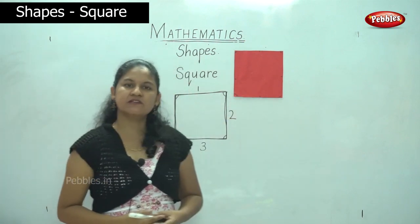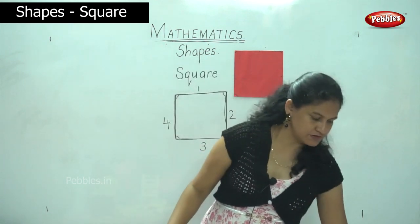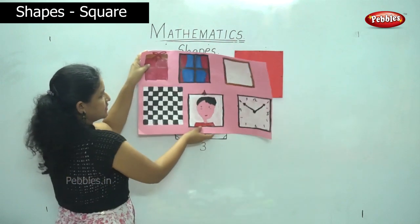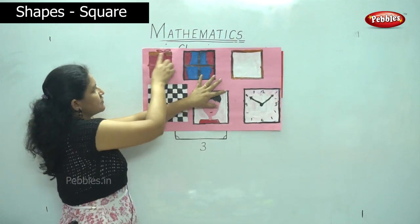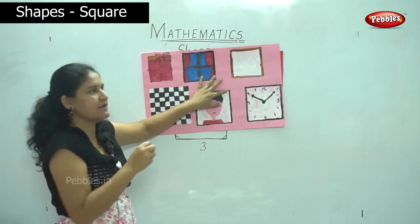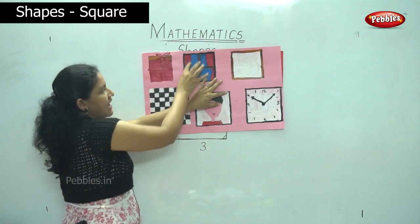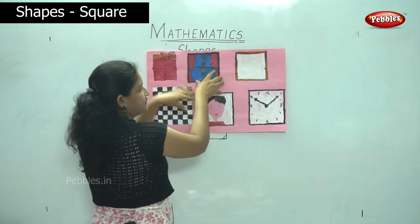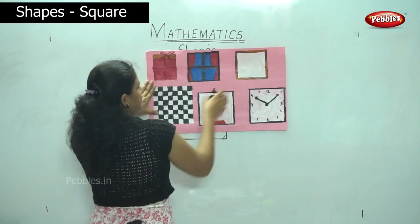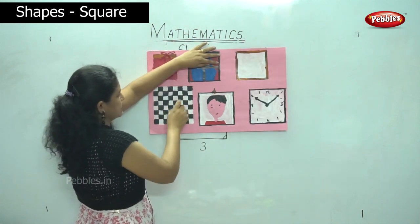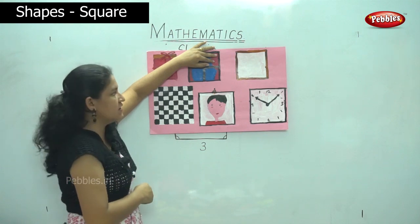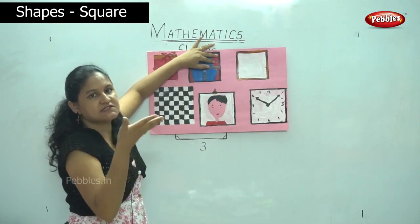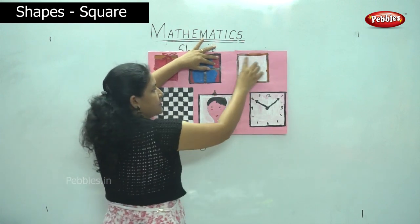So we are going to see some examples of a square. We have six examples of a square. We have the gift box, which is in the shape of a square. The next, we have the window — the windows in our house are in the shape of a square. The next, we have the chess board, which is also in the shape of a square. Then there is the slice of bread — the face of the bread is in the shape of a square.